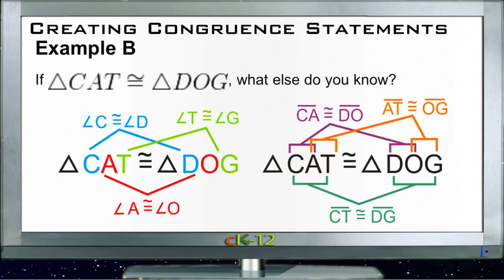Let's take a look at example B. This one tells us that we need to find out what else we know if we're told that triangle CAT is congruent to triangle DOG. Well, like we discussed on the last example here, we know that the order that the angles are described in our triangle statements is important.